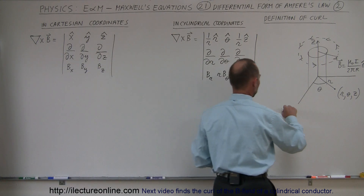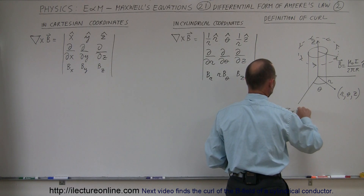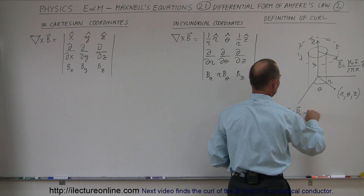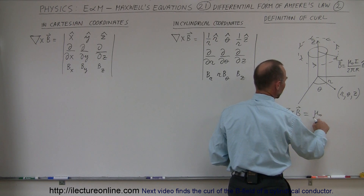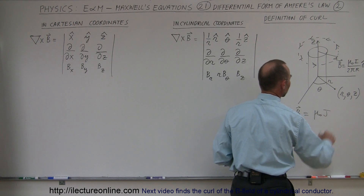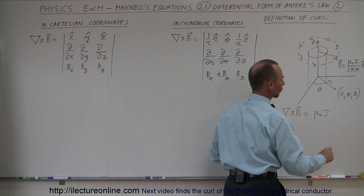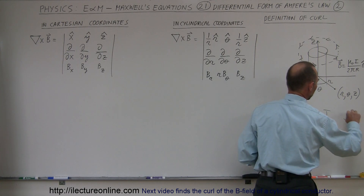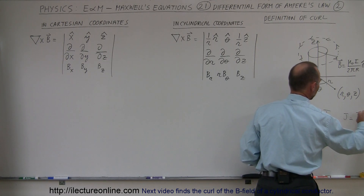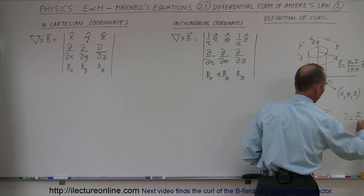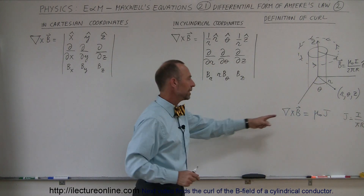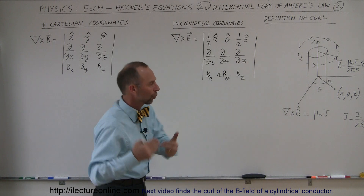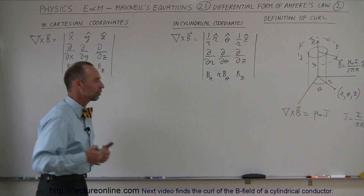So the curl of B is equal to mu sub-naught, which is the permeability of free space, times the current density J. J by definition is equal to the current divided by the area through which it flows, which if it's circular is Pi R squared. So we need to know how to take the curl of the vector B.